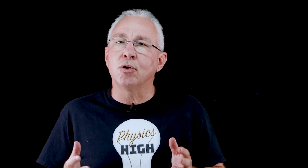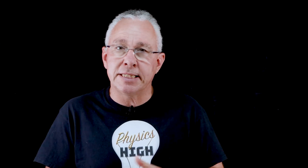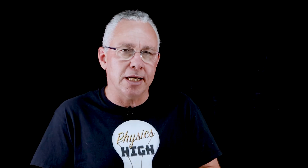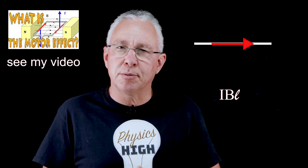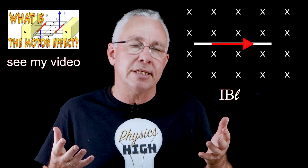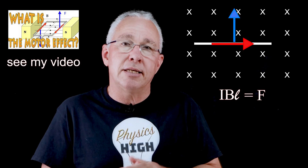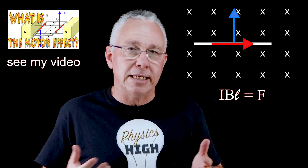The greater the angle between the two vectors, the greater the effect, and the resultant vector is perpendicular to the plane of those two vectors. There are a number of examples we treat in high school. For example, there is the motor effect, where the current multiplied by the magnetic field multiplied by the length of the wire gives us the force that wire experiences, and the direction is perpendicular to both the current and the magnetic field strength.